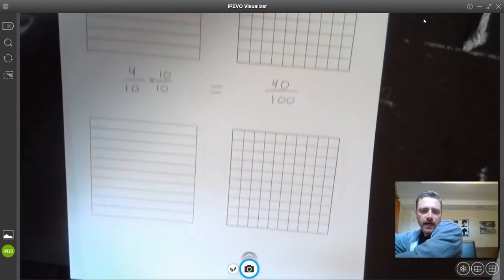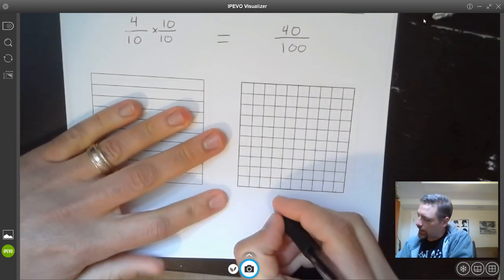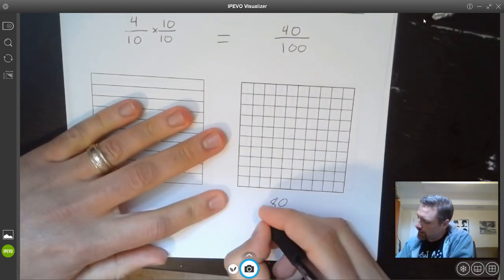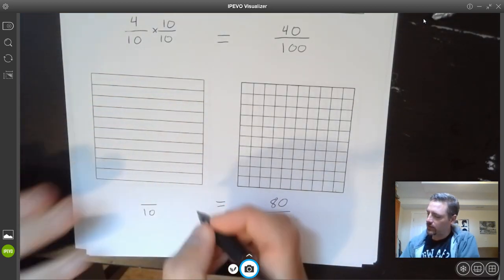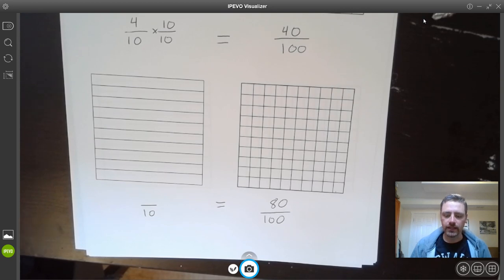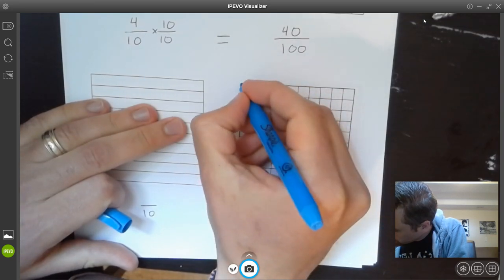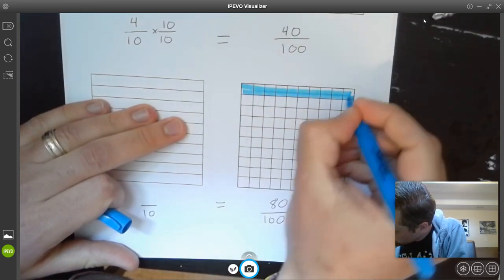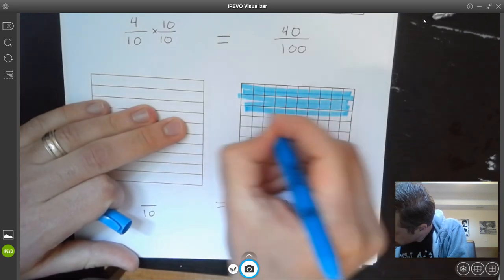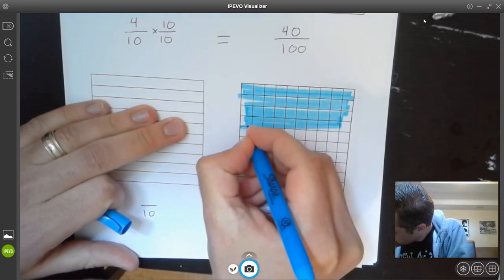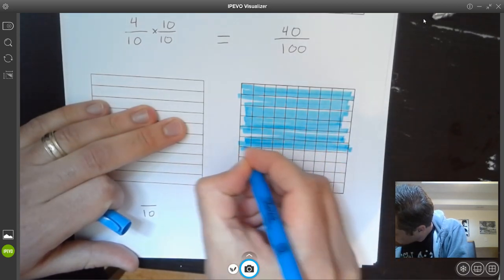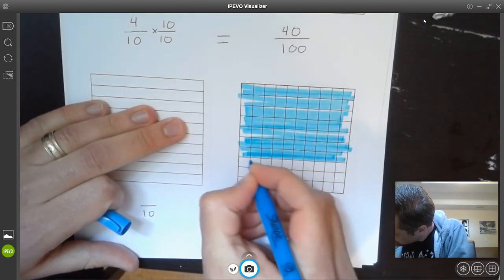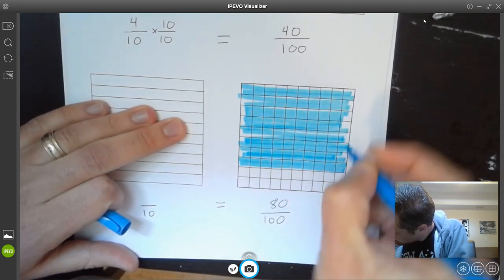Moving on, if we wanted to go in the opposite direction, let's say that I had 80 one-hundredths and I wanted to know how many tenths that is. Well, I can do basically the same thing. First, I need to fill in 80 one-hundredths. So I would go like this. I'm going to go a little faster this time. One, two, three, four, five, six, seventy, and eighty.